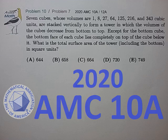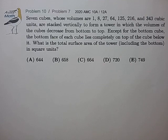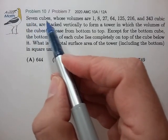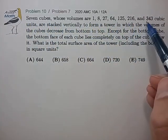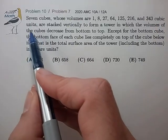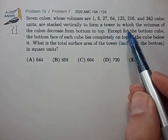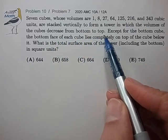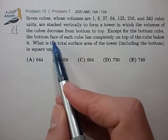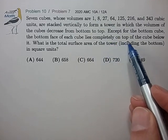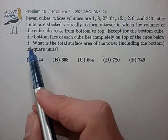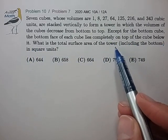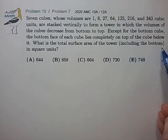So let's get to it. Here's problem 10 from the 2020 AMC 10A. Seven cubes whose volumes are 1 through 343 cubic units are stacked vertically to form a tower in which the volumes of the cubes decrease from bottom to top. Except for the bottom cube, the bottom face of each cube lies completely on the top of the cube below it. What is the total surface area of the tower, including the bottom cube?